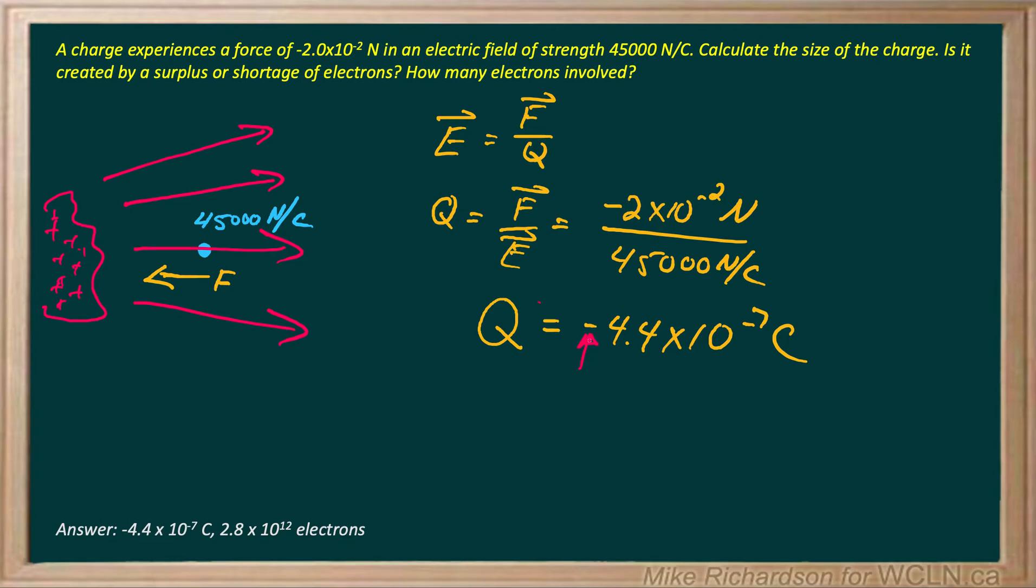Now let's figure out how many electrons are involved. We know the value of the overall charge and we know it consists of electrons. So let's just do some unit cancelling. There's my total charge.